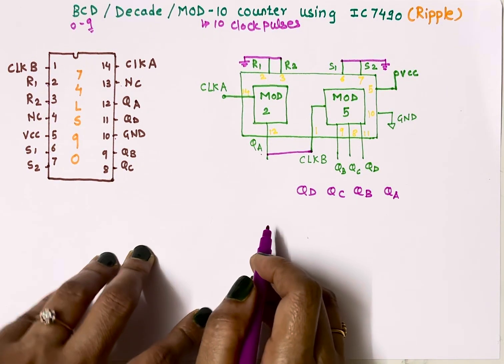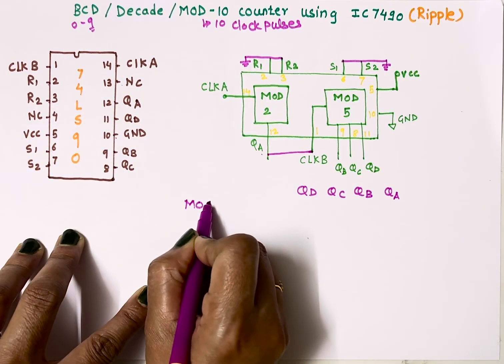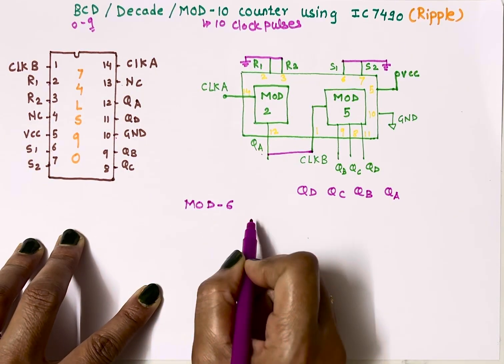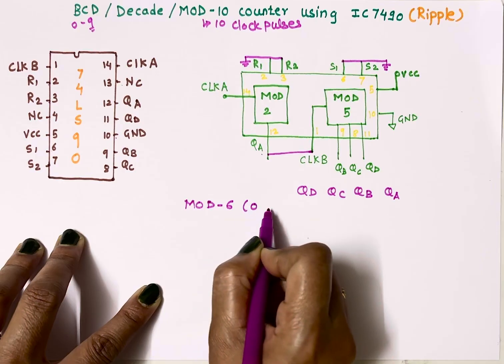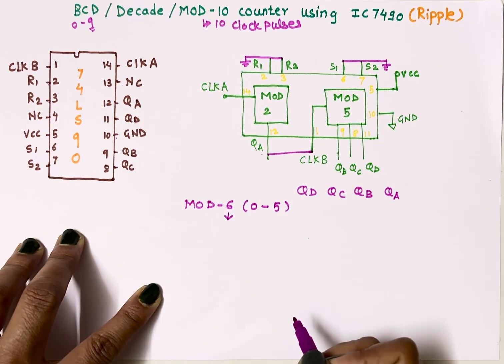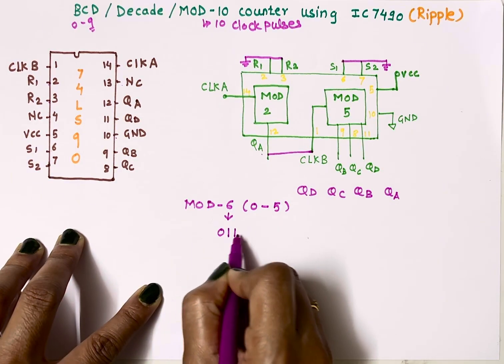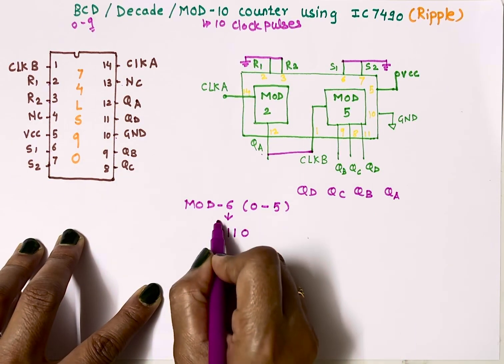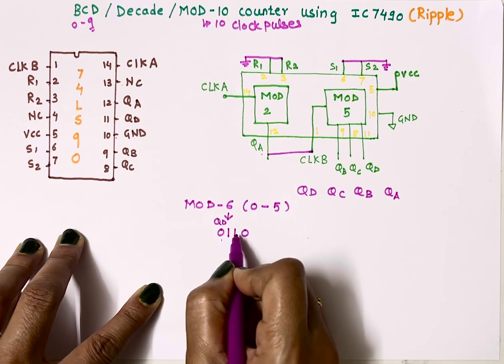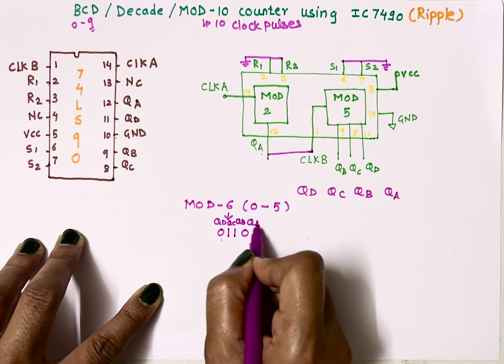Now let's see how to implement mod-6 counter. Mod-6 counter means it will count from 0 to 5. How to write 6 in binary form? 6 can be written as 0110. So here QD is 0, QC is 1, QB is 1, and QA is 0.